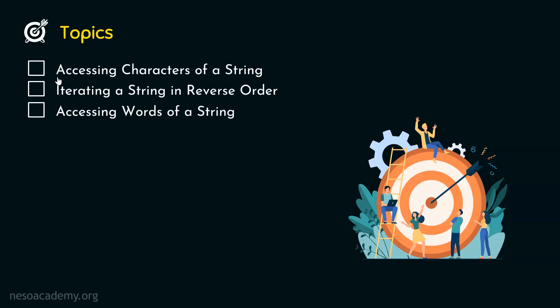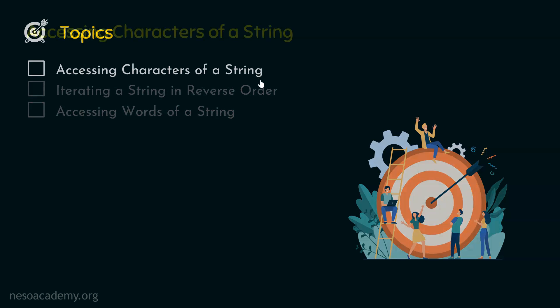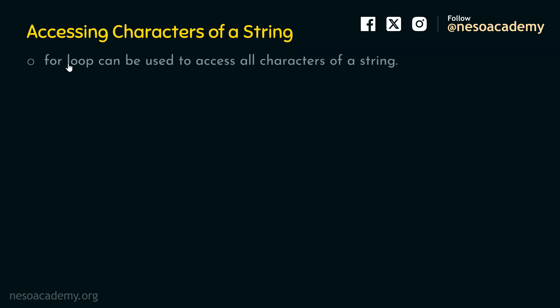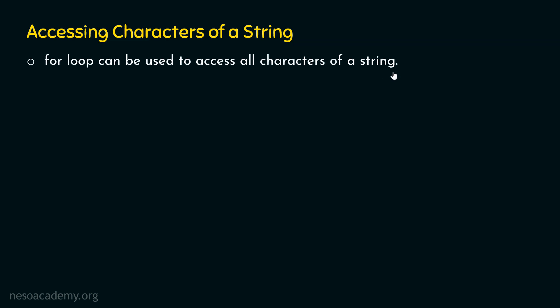Let's get started with the first topic: accessing characters of a string using for loop. We can access each character of a string using for loop. With the help of for loop, we can access all characters of a string one at a time, and we can do whatever we want to do with those characters.